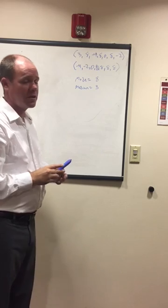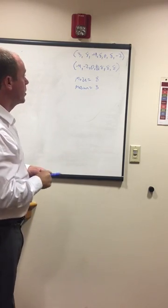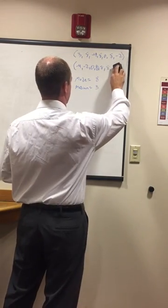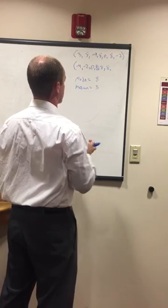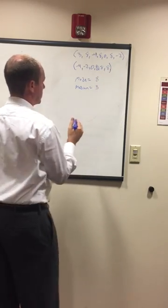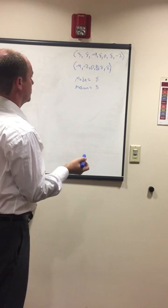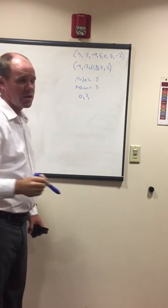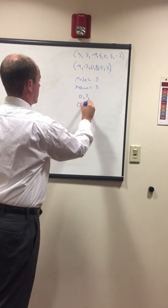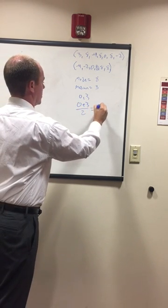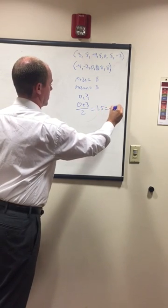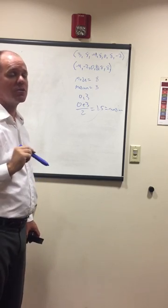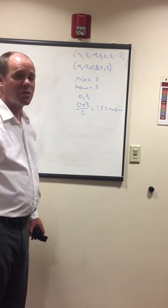Now, what if the number set is even? So this one was seven, but what if the number set was even? Like what if we took this eight away? Now we have six numbers. What would we do then? In this case, we would pick the two middle numbers, which is the third and fourth terms, zero and three. And then we divide them by two. So it would be zero plus three divided by two equals 1.5 equals median. So if you have an even total, you add the two middle numbers together and divide by two. That's your median. If the number set is odd, then it's just that middle number.